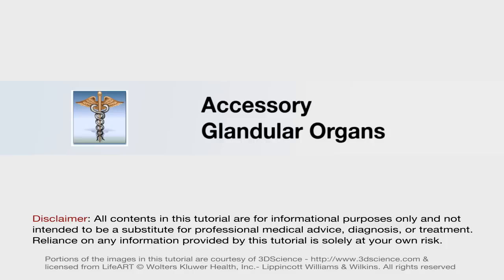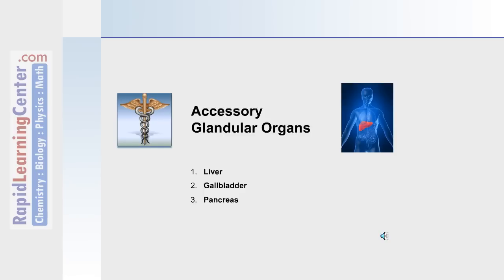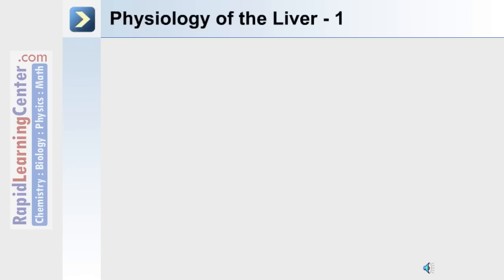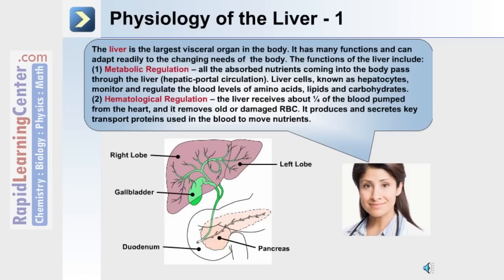We'll now move on to discuss the accessory glandular organs of the digestive system: the liver, the gallbladder, and the pancreas. The liver is divided into a right lobe and left lobe, and it's connected to the gallbladder and pancreas through a duct. Both of these empty their contents into the duodenum, or first portion of the small intestine.